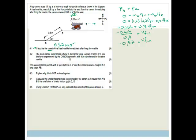The steel marble experiences a force F during the firing. Explain in terms of F how the force experienced by the cannon compares to that of the steel marble. This is just Newton 3. And it's hard to believe, but basically the cannonball and the marble experience the same size force. The only reason they move differently is simply because of their sizes. Newton's third law says if object A exerts a force on object B, then object B will exert an equal but opposite force on object A. So the answer is that they will feel the same force but in opposite directions.